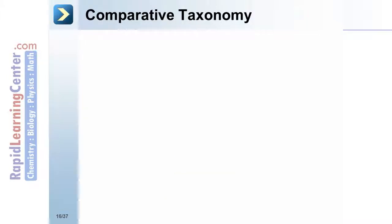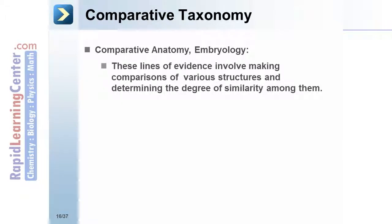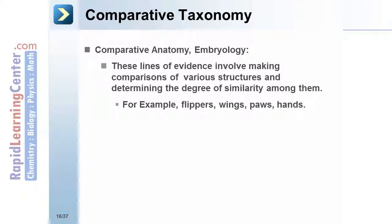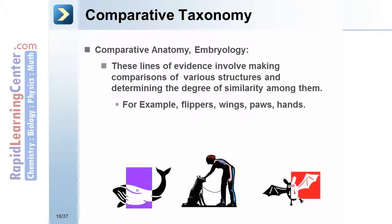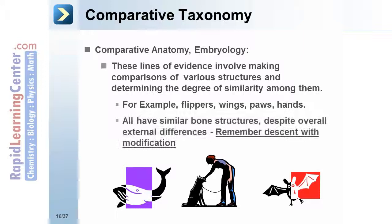Comparative anatomy and embryology involve making comparisons of various structures and determining the degree of similarity among them. For example, flippers, wings, paws, and hands all have similar bone structures despite overall external differences — illustrating descent with modification.